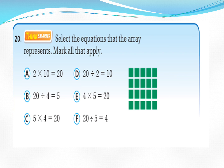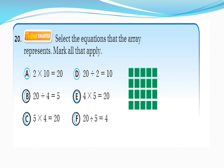Let's do question 20 together. Select the equations that the array represents — mark all that apply. How many columns does it have? 5 columns. And how many rows? 4 rows. What is the total number of tiles? 20. Using 4, 5, and 20, the answers are: B — 20 divided by 4 equals 5; E — 4 multiplied by 5 equals 20; C — 5 multiplied by 4 equals 20; and F — 20 divided by 5 equals 4. These are all related facts.